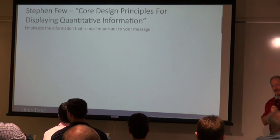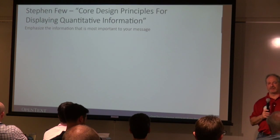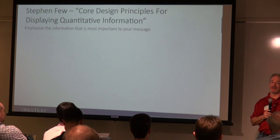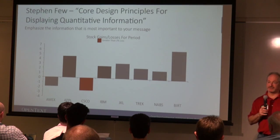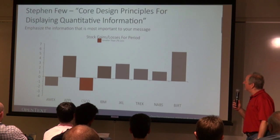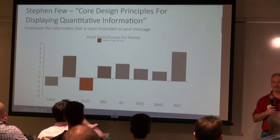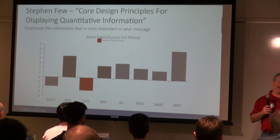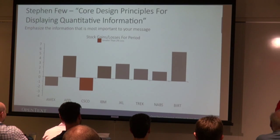Emphasize information that is most important to your message. Every chart tells a story, and depending on the story you want to tell there's an appropriate chart. More importantly, there's an appropriate way of telling your story that makes it more compelling. This is an example where I do want to change the color because it's part of my story — these are stock gains and losses, and I want to emphasize the ones with greater than 2% loss. Last time I did this presentation I was in a Cisco building and apparently they didn't have a good year.